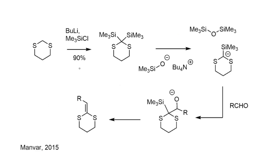A much more modern version of this chemistry was reported by Manvar and co-workers almost 50 years later. They start with a cyclic 1,3-dithiane and react it with two equivalents of butyllithium and two equivalents of chlorotrimethylsilane. Initially, the first deprotonation gives an organolithium species with an extra equivalent of butyllithium present. Upon addition of trimethylchlorosilane in the quenching step, you get the first silylation, then the second equivalent of butyllithium does a fast second deprotonation. The residual butyllithium and trimethylchlorosilane then react again to give the bis-silylated product.